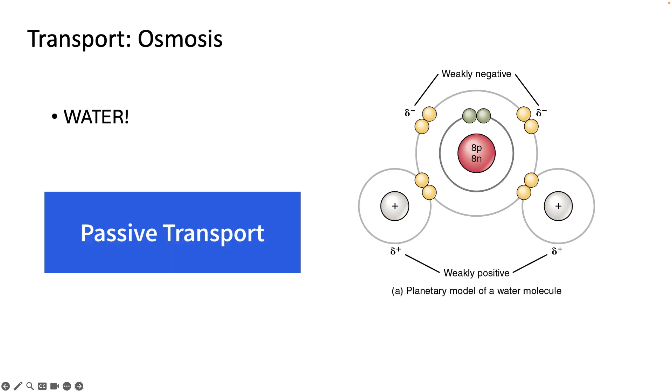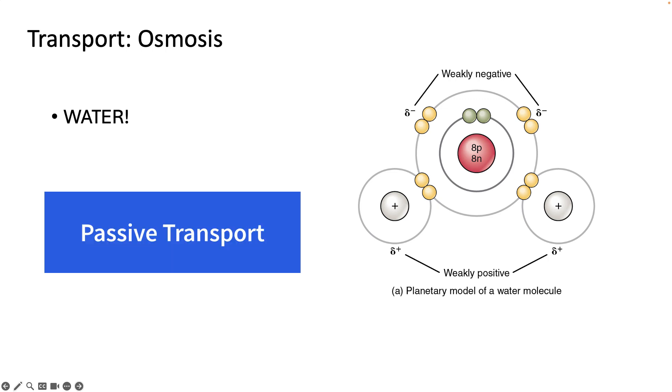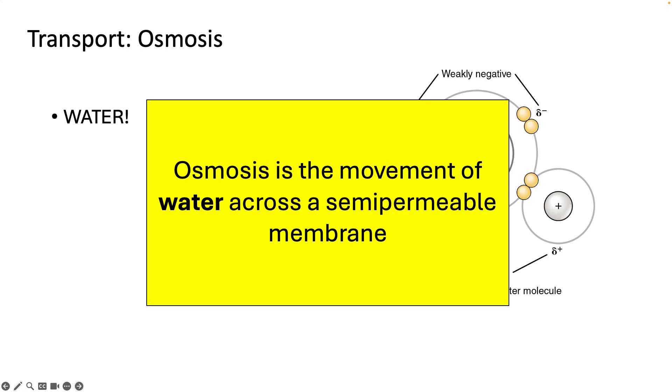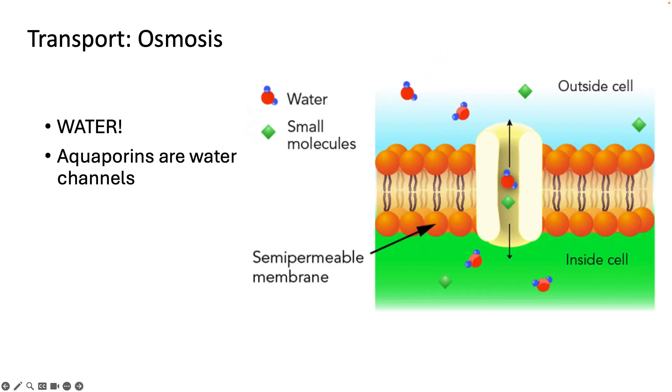This is another type of passive transport where water is required to move across a semipermeable membrane. Water is polar so it can't move very well by itself across the membrane. However, we have lots of special water channels called aquaporins that allow water to cross the membrane. We have so many of these aquaporins that it makes it seem as if water can just flow across at will.